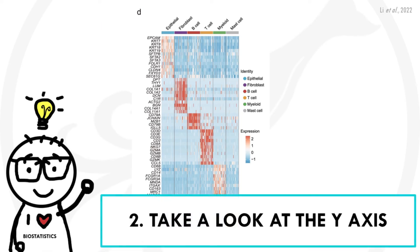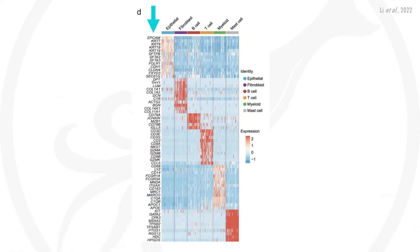Next, we need to check the y-axis. In general, here we will find the genes. In cases where heatmaps display gene expression data of hundreds of genes, the gene names may not be displayed. But in this case, it looks like they filtered out their data set and they are only showing the expression of certain subsets of genes. So we actually know which genes are shown.